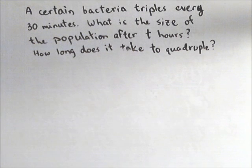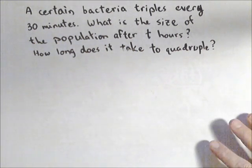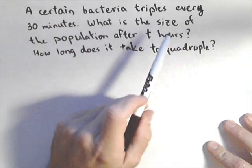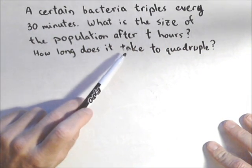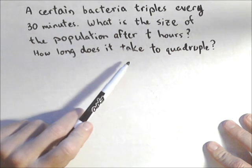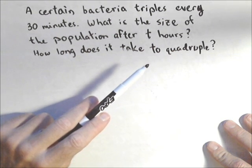Here we have an exponential model problem with a couple of small wrinkles. Let's say we have a certain bacteria that triples every 30 minutes. What is the size of the population after t hours? How long does it take to quadruple?